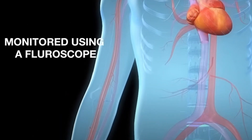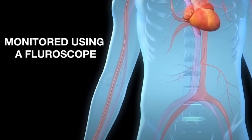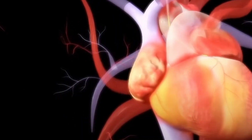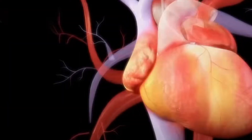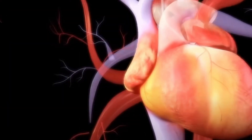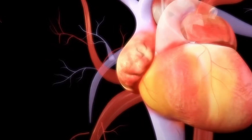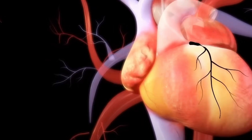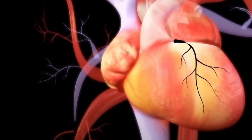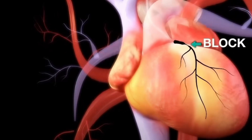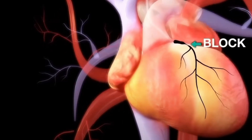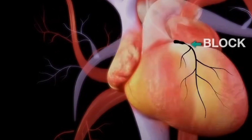This is monitored using a continuous X-ray imaging device called a fluoroscope. The guide wire is removed and the tip of the catheter is positioned to enter the coronary artery. A special dye is injected, which allows the fluoroscope to take X-ray images of the arterial interiors and help identify the position of the blockage. This is called an angiogram.